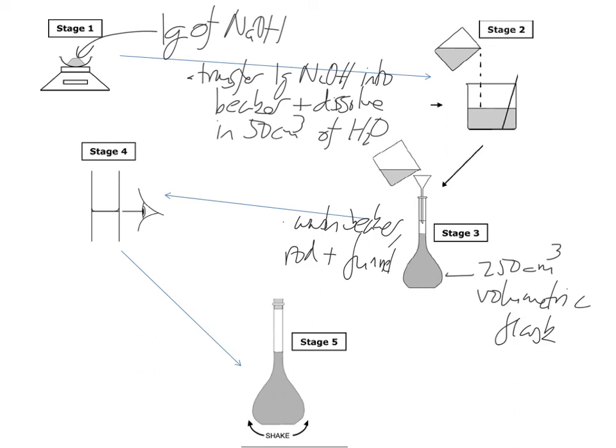If we've got too much in there, we've got a problem. We have to start again. So what we're going to do is to get the liquid from that level up to the line, we're going to use a dropping pipette or a pasta pipette.